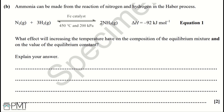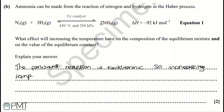Part B. Ammonia can be made from the reaction of nitrogen and hydrogen in the Haber process: N₂ + 3H₂ ⇌ 2NH₃, with an Fe catalyst at 450°C and 200 kPa. The enthalpy is −92 kJ/mol. What effect will increasing the temperature have on the composition of the equilibrium mixture and on the value of the equilibrium constant? The forwards reaction is exothermic — we know this because our ΔH is negative.